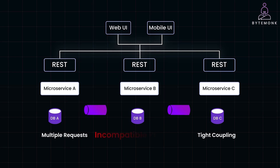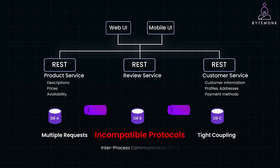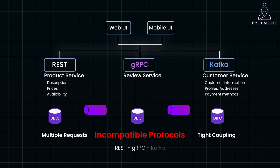Finally, microservices might also use various inter-process communication (IPC) mechanisms that aren't well-suited for external clients. For example, your services might use REST, gRPC, or message queues like Kafka for internal communication. Exposing these internal communication protocols directly to clients can introduce security risks and increase complexity, because external clients typically expect standard HTTP or HTTPS APIs.